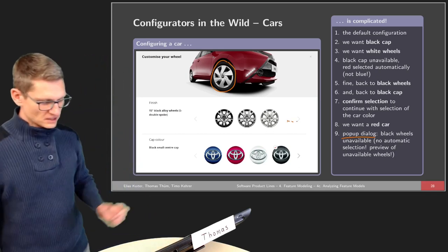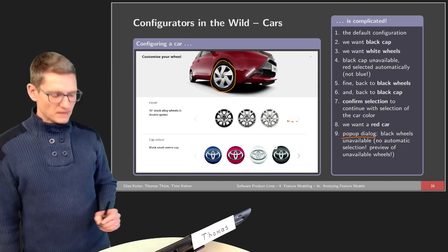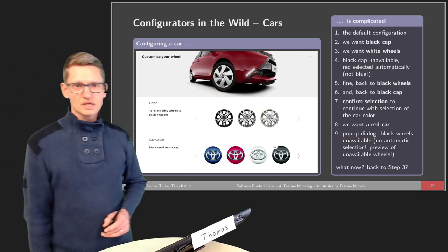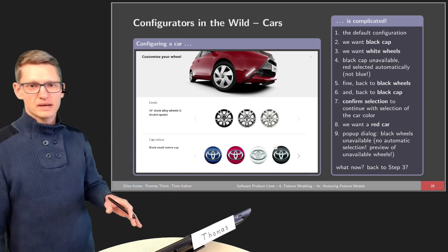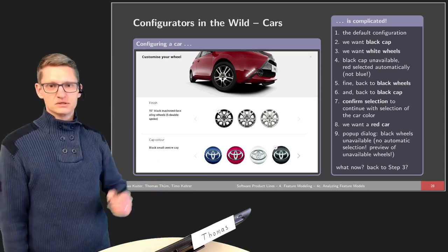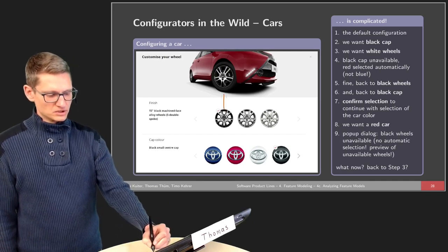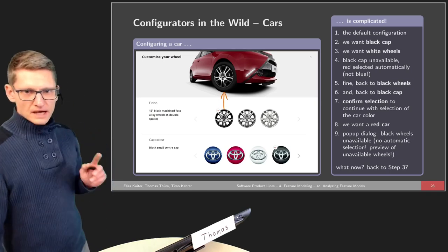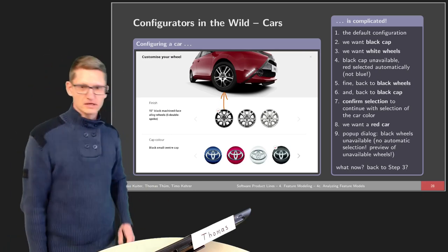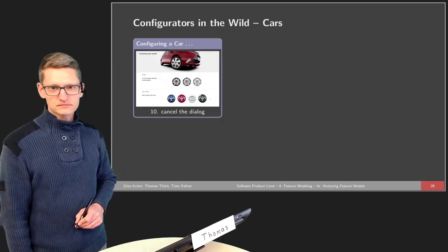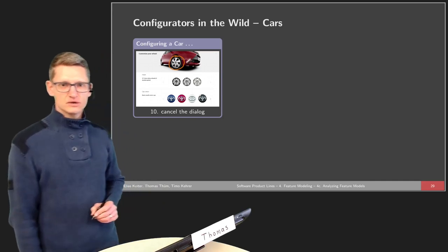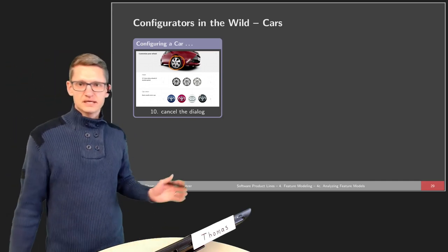They're not even included here. I have to make a selection, and if I select the white wheels again, I would go back to step three, because then it will again be incompatible with the black cup in the middle. What the dialogue wants is for me to select a different kind of wheel. I tried to trick the configurator to see how well it's implemented and found out that I can cancel the dialogue. What happened then is we were actually staying with the default wheels, even though they are not available. I simply cancelled the dialogue and continued the configuration.